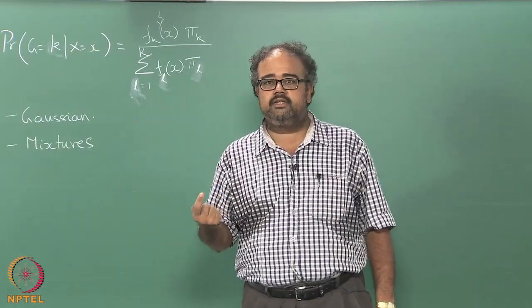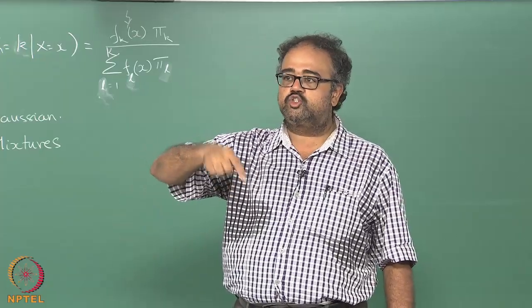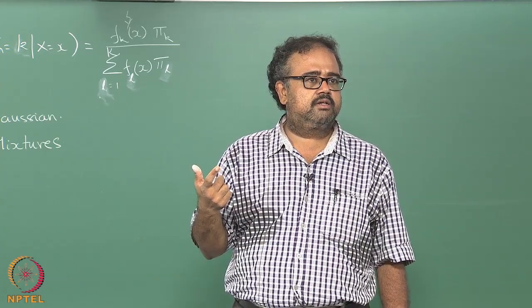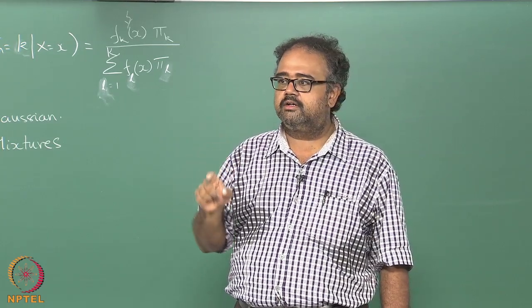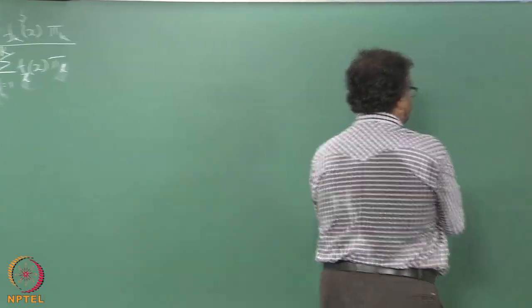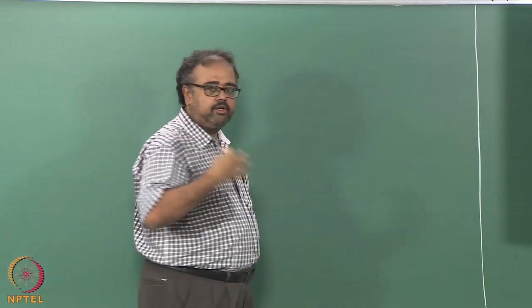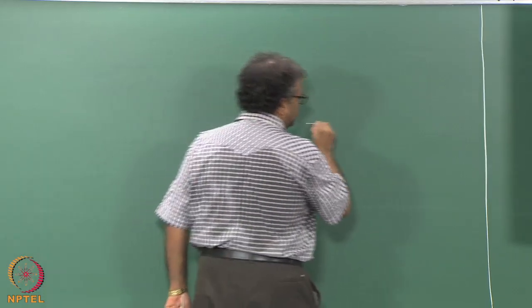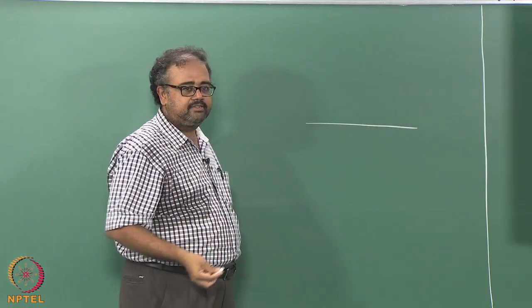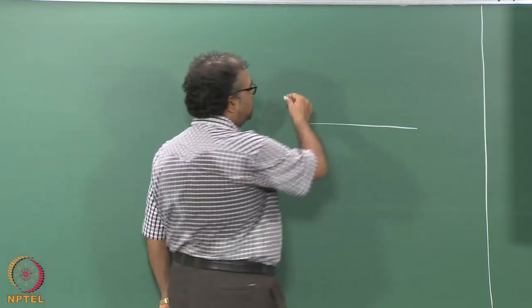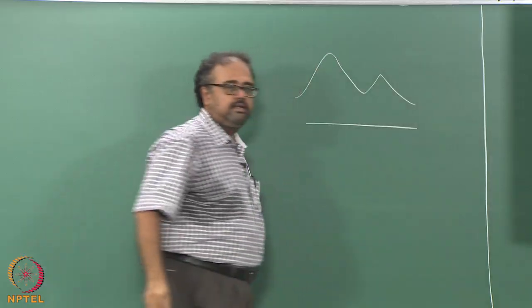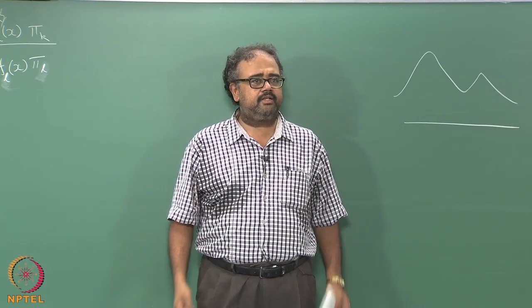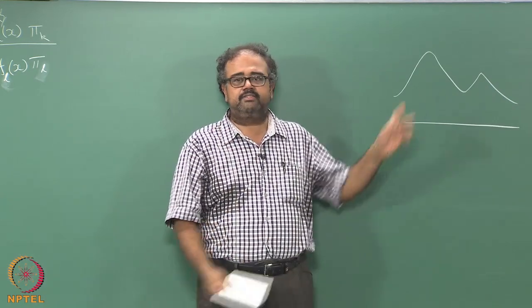So instead of a single Gaussian, you assume that there are multiple Gaussians which jointly generate the data for you. People are familiar with the concept of a mixture distribution? Very simple - suppose I want to model this following distribution over univariate data. Can you think of a parametric form that will give me this kind of a distribution? Looks a little daunting - can you come up with a close form expression for this? It looks little daunting.